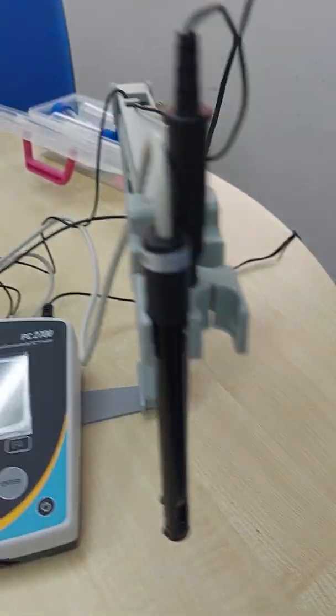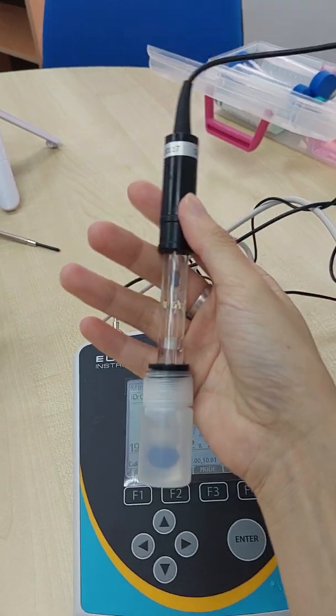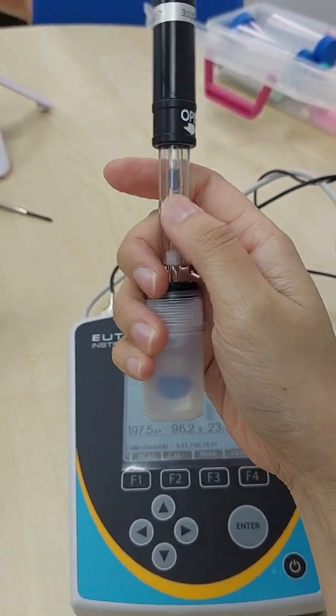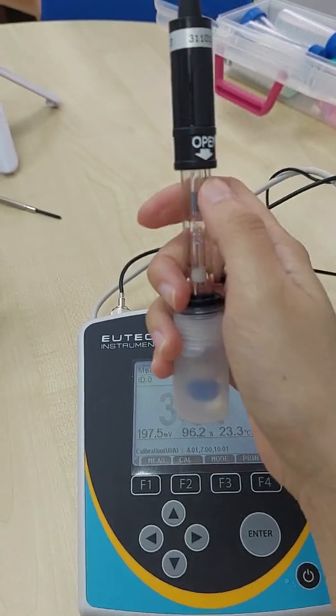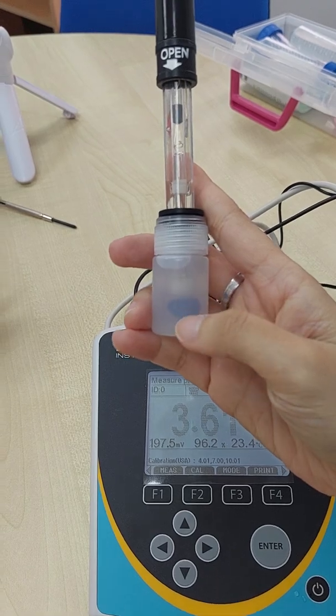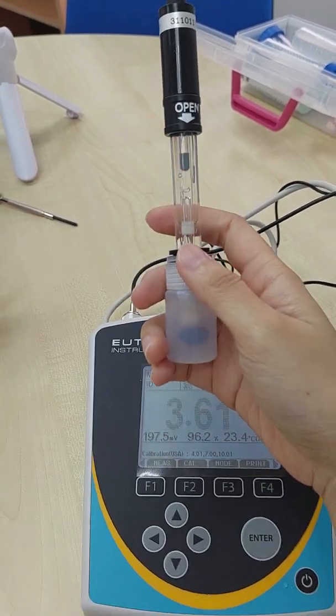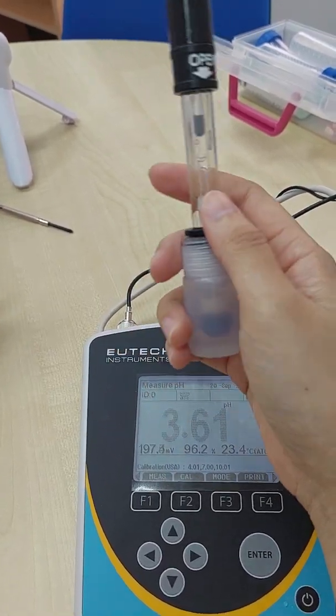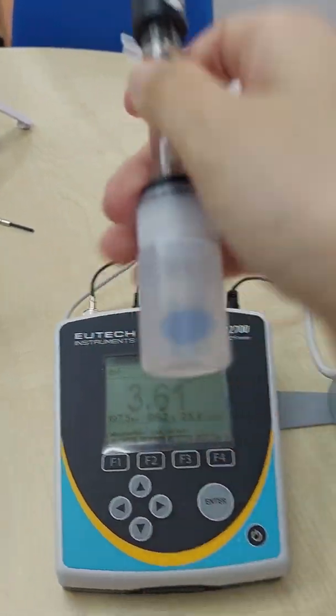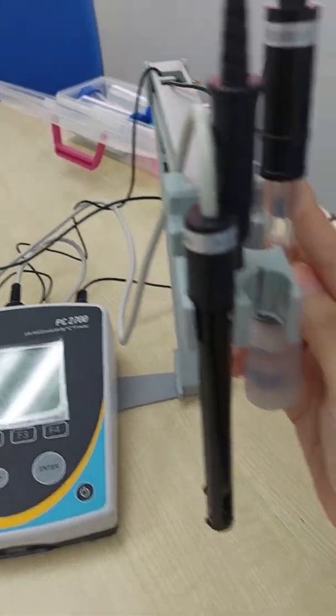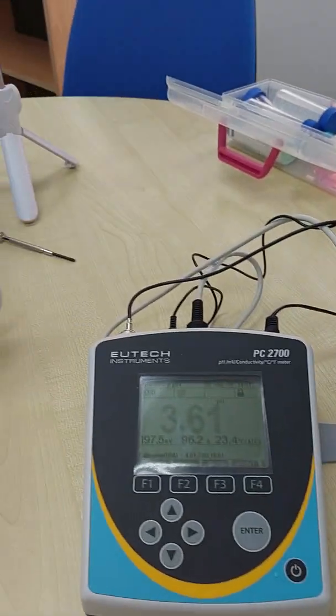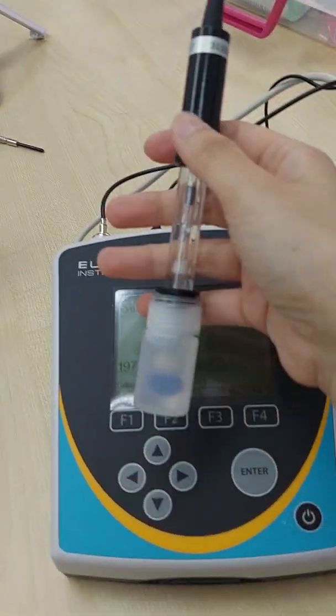So this pH electrode, as I mentioned earlier, is double junction refillable. You will need to make sure the electrolyte inside is up to the hole level, and then always store your electrode in KCL solution. Never store in distilled water or any pH buffer, only KCL solution. And then every day before measurement, we will need to perform pH calibration and then always rinse with distilled water for each measurement.